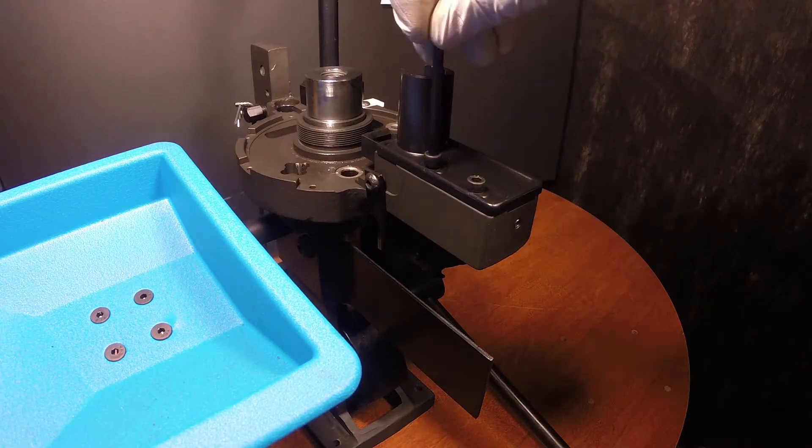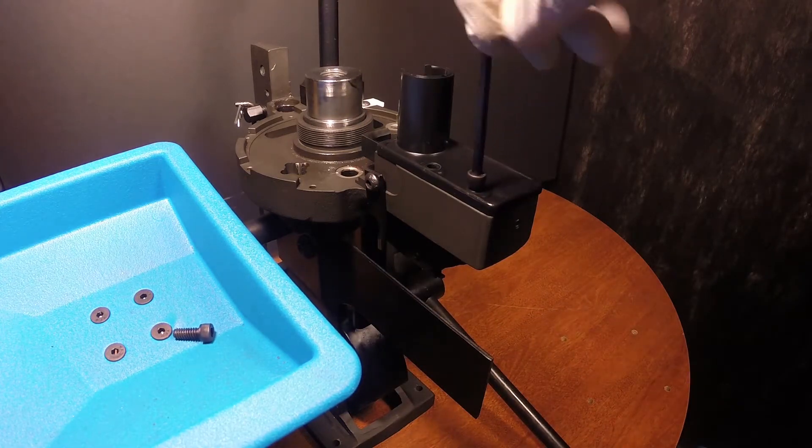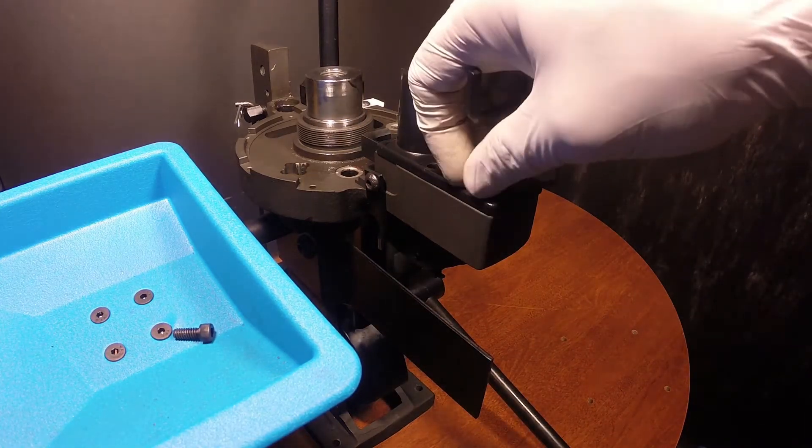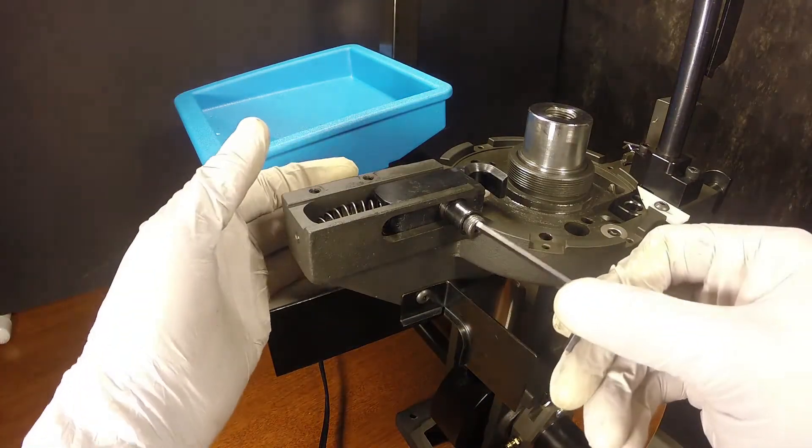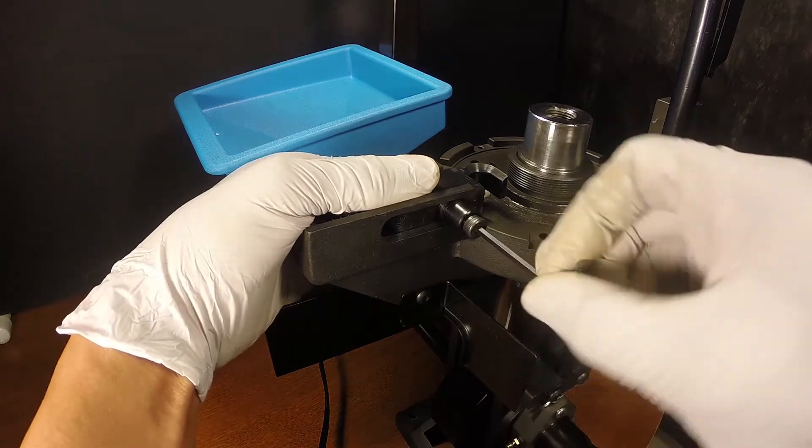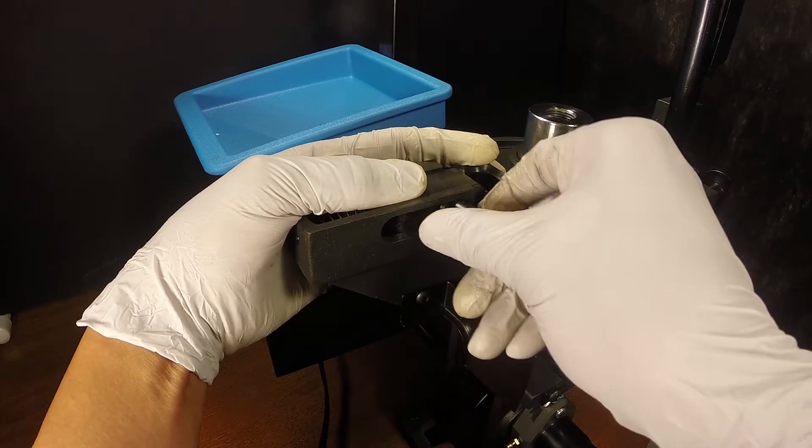The case feeder housing contains a spring under compression. Remove these screws and carefully remove the case feed adapter housing. Place your hand on the plunger while removing the roller bolt. This will prevent the case feeder plunger and spring from jumping out of the machine.